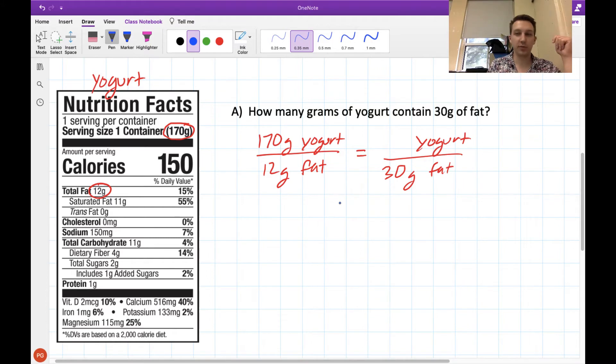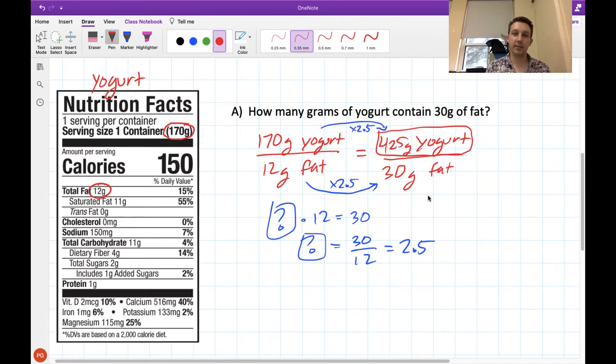Again, we're going to use the same sort of proportional reasoning that we did before. We've got to think about how much larger are we getting here? What are we multiplying by to go from 12 grams to 30 grams of fat? This is the same as asking what is 30 divided by 12. If you punch that into your calculator, you'll get an answer of 2.5. So this tells us that it's times 2.5. Using our proportional reasoning, noting that these rates need to stay the same because we're talking about the same type of yogurt, we would have to consume 425 grams of yogurt to get 30 grams of fat.